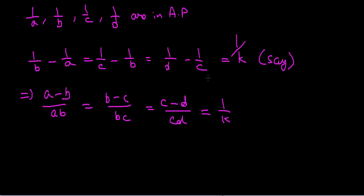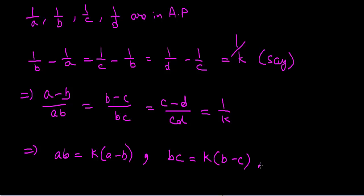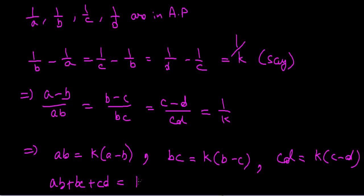Rearranging, we get ab equals k(a − b), bc equals k(b − c), and cd equals k(c − d). Now adding all three: ab + bc + cd equals k(a − b) + k(b − c) + k(c − d).